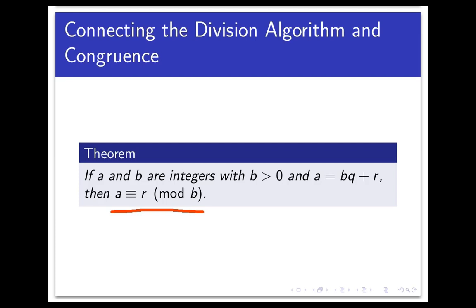And what that means in English is that a is always congruent to the remainder we get when we divide a by b. So this is a pretty nice way to think about integer congruence. It's just something that's naturally associated with regular division that we've known since the third grade.